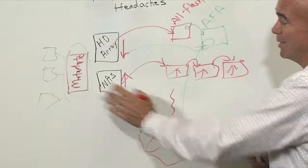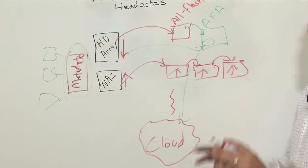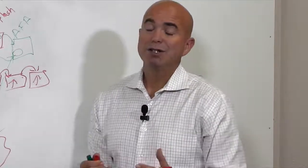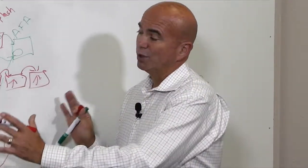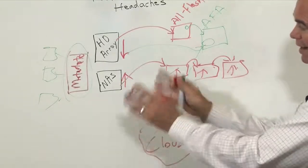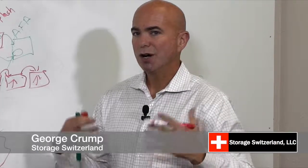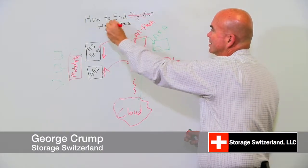The key is to have something that manages metadata and data placement for you, allows you to set policy, and does the movement of data — so your front-end applications don't need to change. They're just talking to what they think is the same mount point all the time. That's really the key: to eliminate migration headaches, you have to eliminate migration.